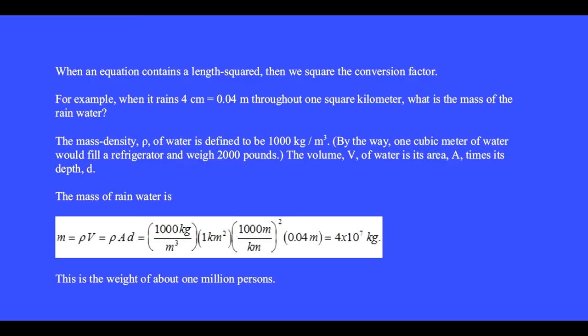When an equation contains a length squared, then we square the conversion factor. For example, when it rains 4 centimeters equals 0.04 meters throughout one square kilometer, what is the mass of the rainwater?